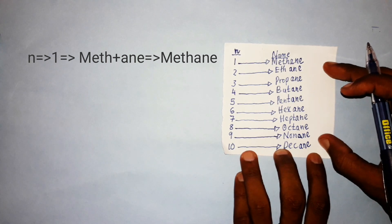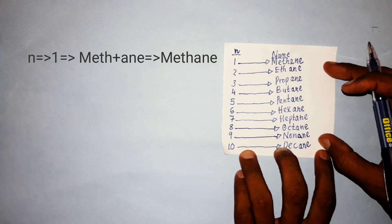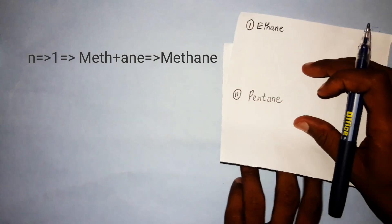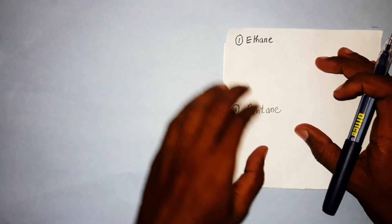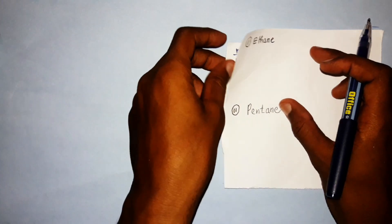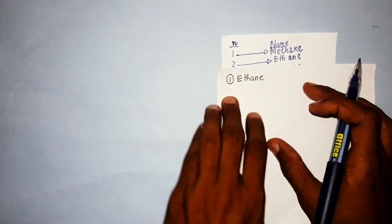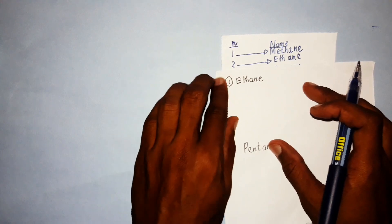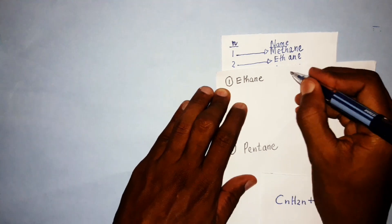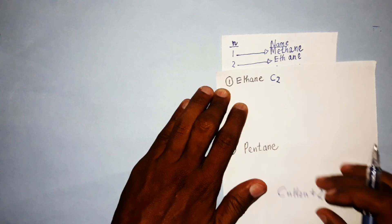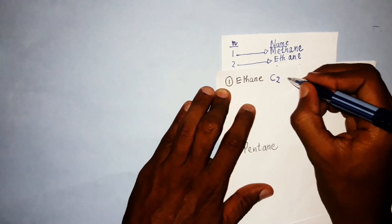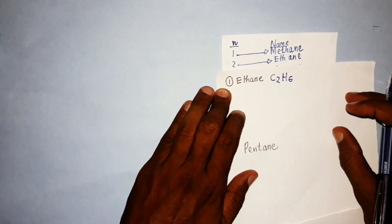Now let us write the molecular formula, open structural formula, and condensed formula for ethane. 'Eth-' means the number of carbon atoms is two. Using the general formula CₙH₂ₙ₊₂, the molecular formula becomes C₂H₆, since n=2 gives 2×2+2=6 hydrogen atoms.